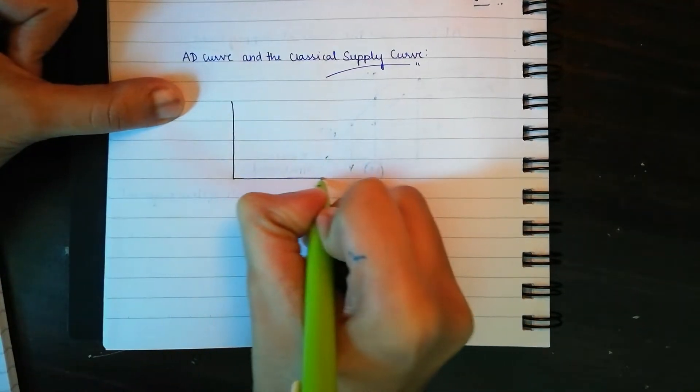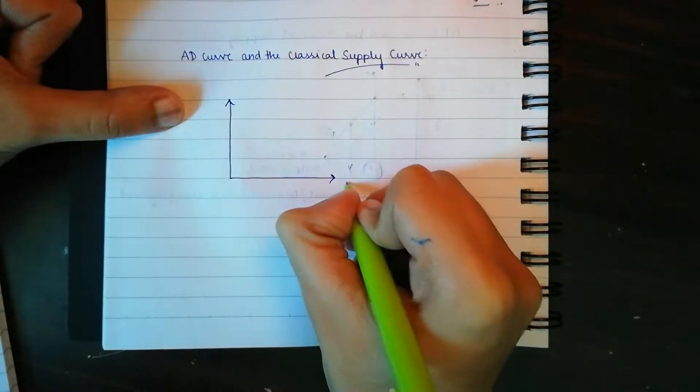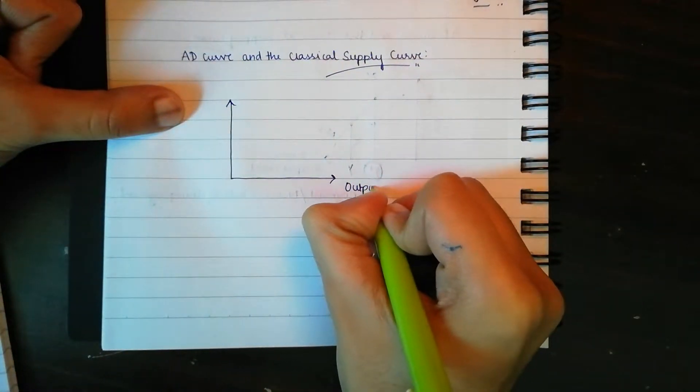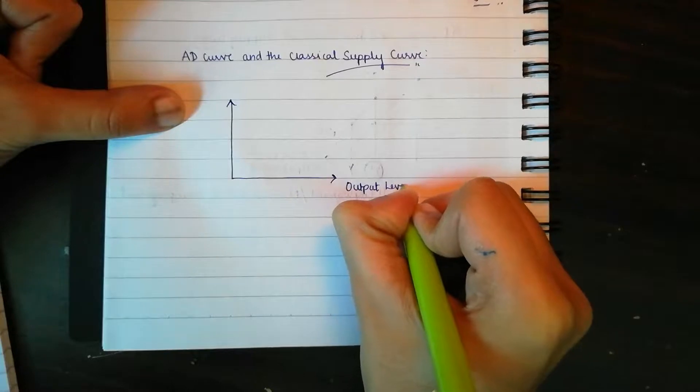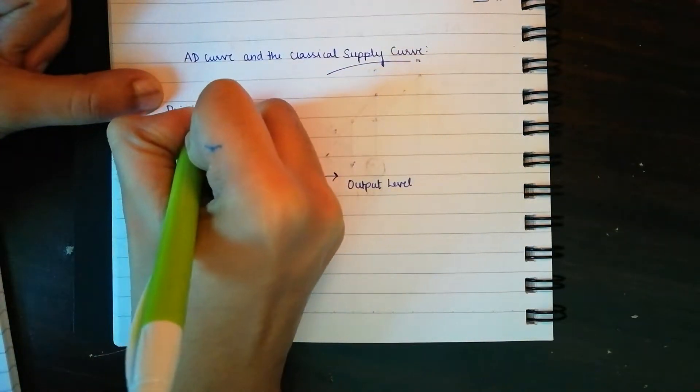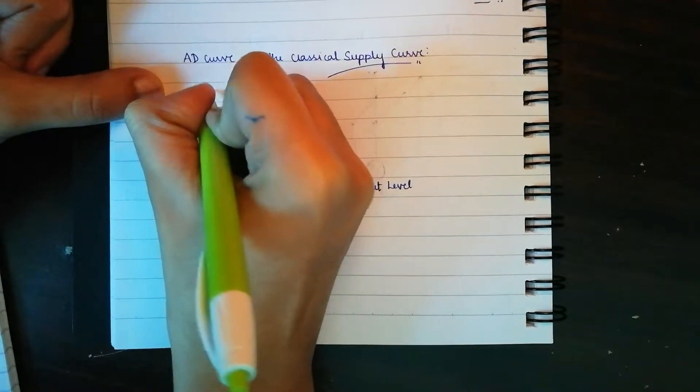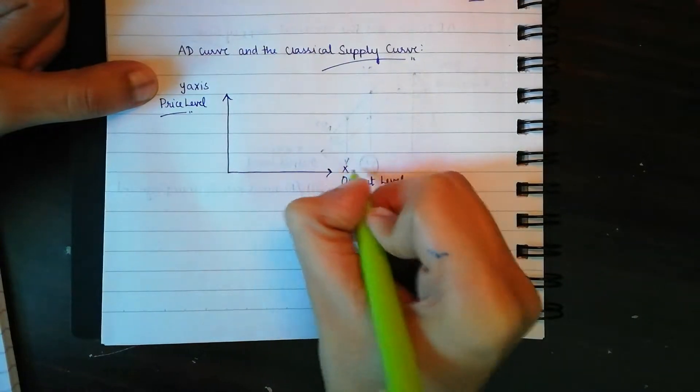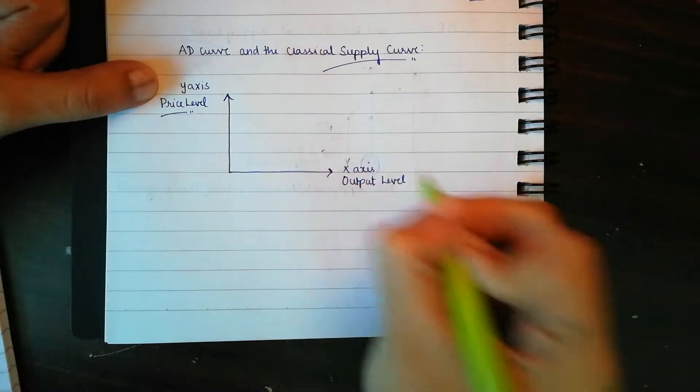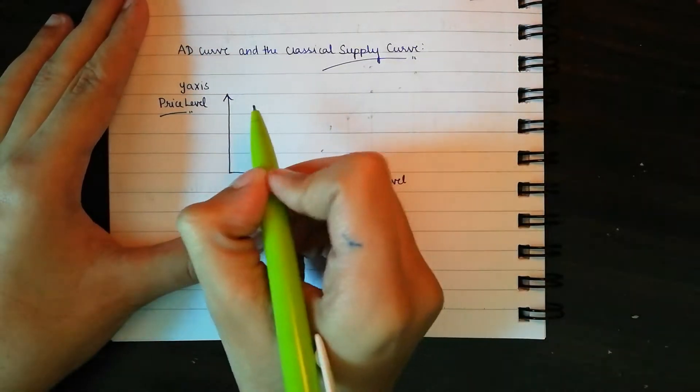Now this is your output level and this is your price level, and that's your Y-axis and your X-axis. So now first we start to draw one of the two curves.